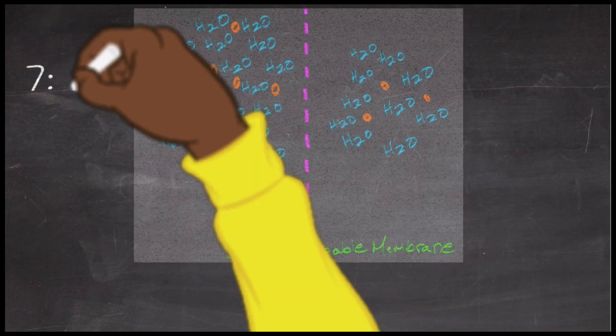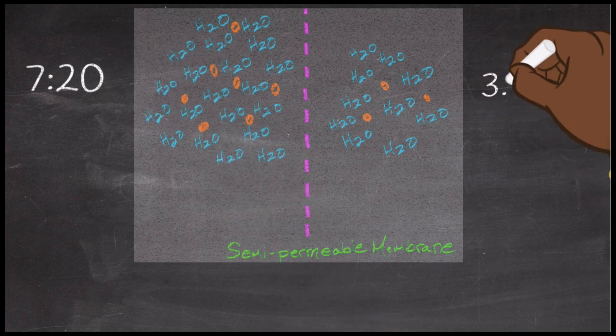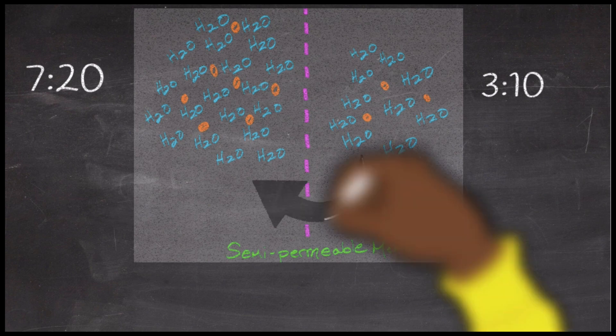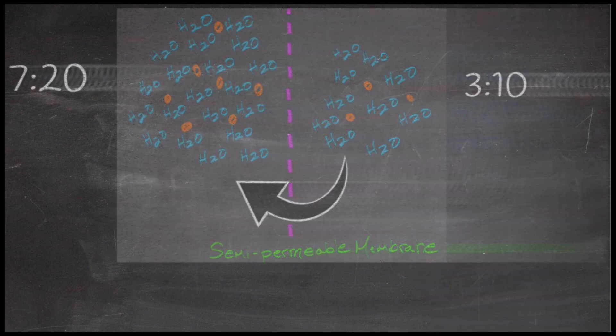Let's take a look at this next one, which is more challenging just because the numbers are not as easy to work with. We have a ratio of 7 to 20 on the left and 3 to 10 on the right. 7 to 20 is a higher concentration of solutes than 3 to 10. As a result, we would expect water to move to the left.